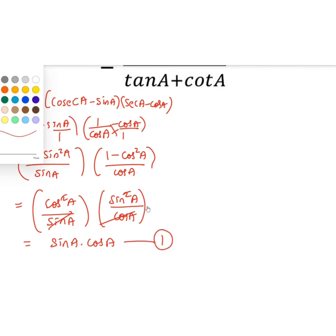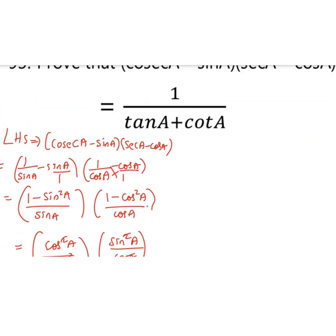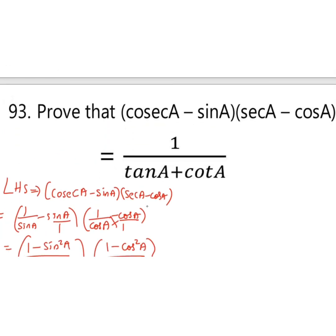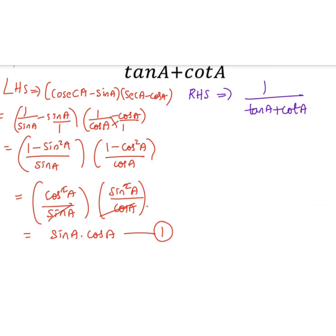Now we will prove RHS. We have 1 by tan A plus cot A. It will be 1 by sin A by cos A plus cos A by sin A.